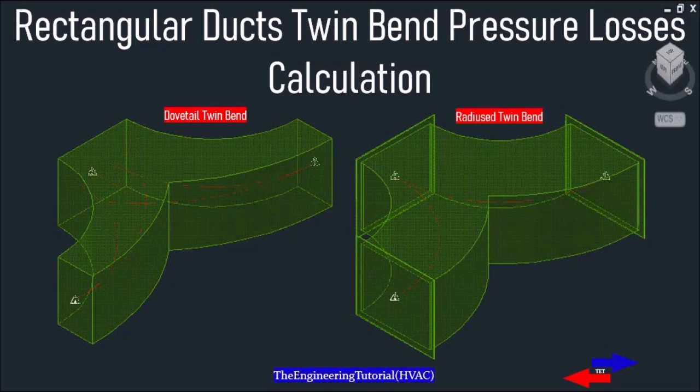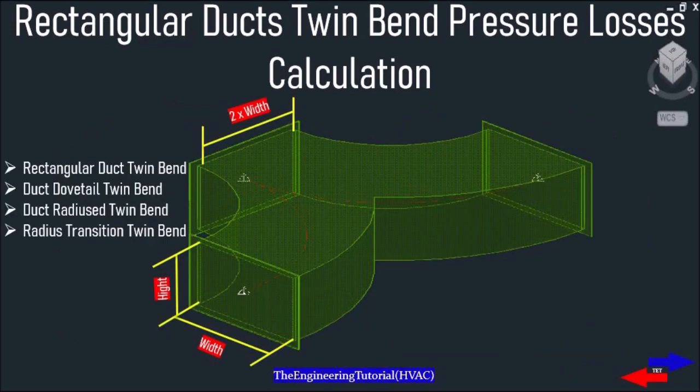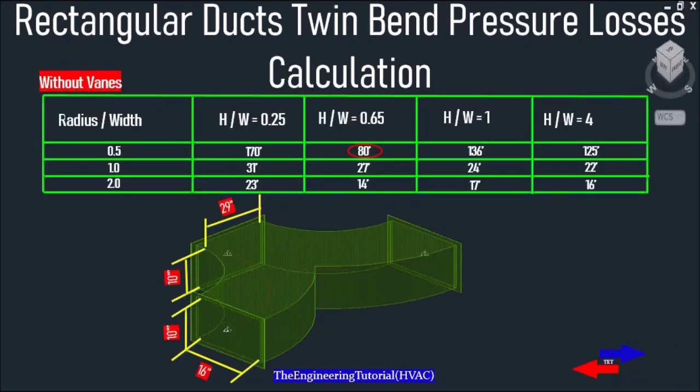By the end of this video, you'll learn the easiest way of pressure loss calculation through a twin band or double elbow. There are several types of twin bands, such as rectangular twin band, rectangular dovetail twin band, radius twin band, and radius transition twin band.